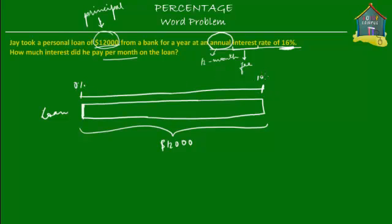This $12,000 is 100% of the loan, so it runs from 0% to 100%. Let's also put some color in it. The bank charged him an annual interest rate of 16%, and we know 16% is 16% of $12,000. So let's mark 16% — it's probably somewhere over here. This is 16% of the principal or the loan amount.